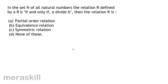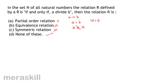In the set N of all natural numbers, relation R is defined by: A is related to B if and only if A divides B. For example, 10 is divisible by 5, but 5 is not divisible by 10 — so it's definitely not symmetric. And if it's not symmetric, it is not equivalence either.